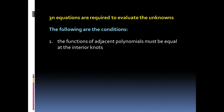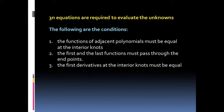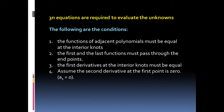The following are the conditions to work with the 3n equations. First, the functions of adjacent polynomials must be equal at the interior knots. Second, the first and the last functions must pass through the endpoints. Third, the first derivative at the interior knots must be equal. And fourth, we will assume that the second derivative at the first point is zero.